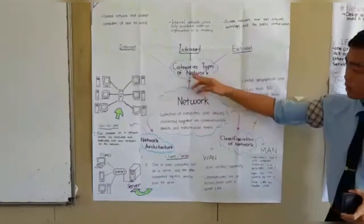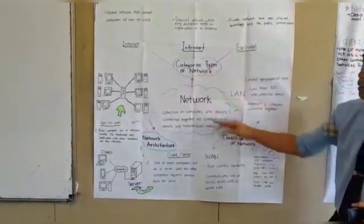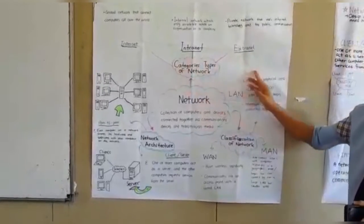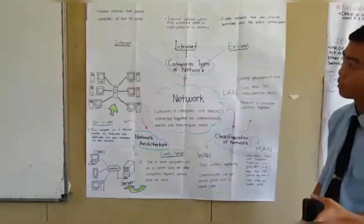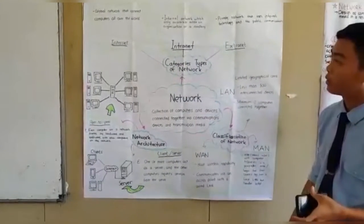First I will talk about categories type of network. There are three categories: internet, intranet and extranet. Internet, the definition is global network that connects computer all over the world.